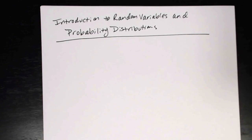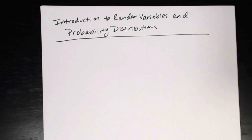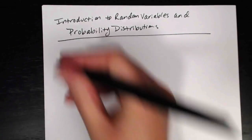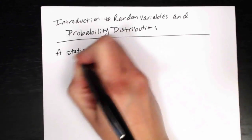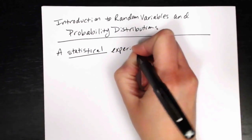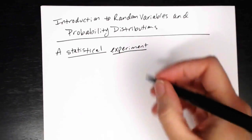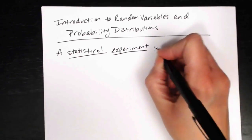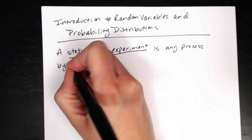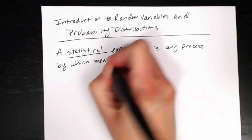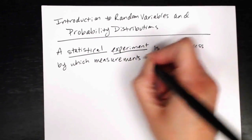First we want to talk a little bit about random variables. Since random variables typically result from a statistical experiment, we want to start by defining what we mean when we say statistical experiment. A statistical experiment is any process by which measurements are obtained.